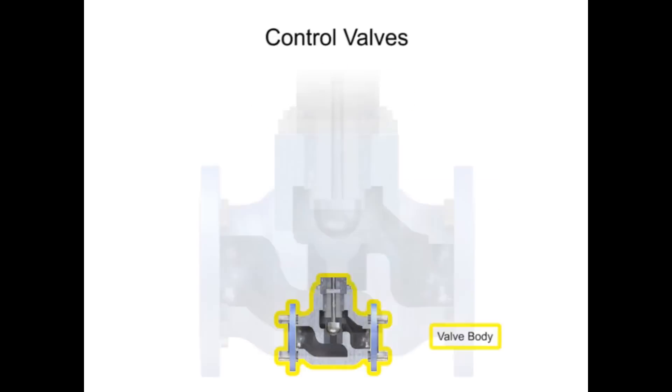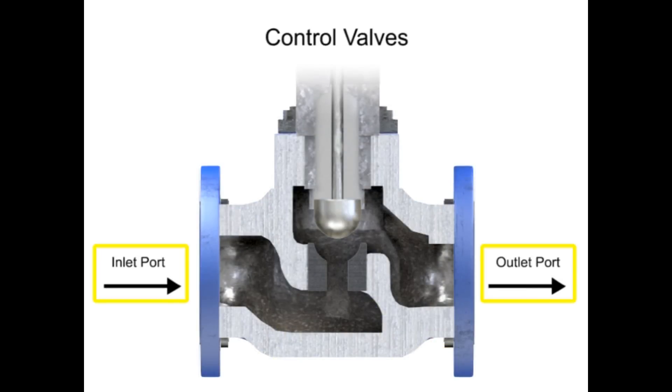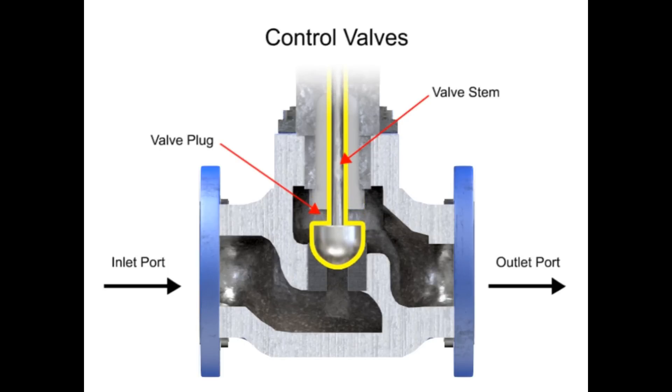The valve body provides the fluid connections and a movable restrictor comprised of a valve stem and plug that is in contact with the fluid that varies the flow. The valve actuator is the component that physically moves the restrictor to vary the fluid flow.